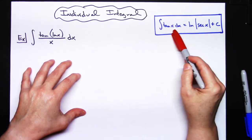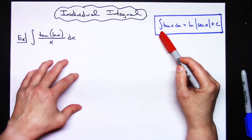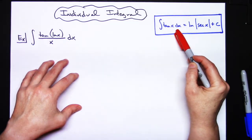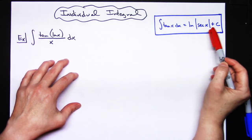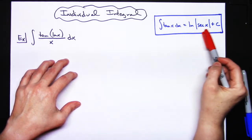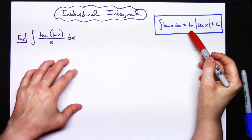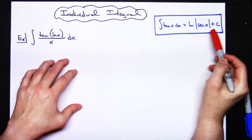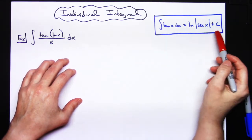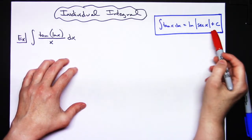...that we know or that you have memorized the integral of tangent x dx being the natural log absolute value secant x plus C. Other equivalent answers you might have memorized that it's equal to negative natural log absolute value cosine x plus C. Equivalent answers, I'm just in this particular one using this one.